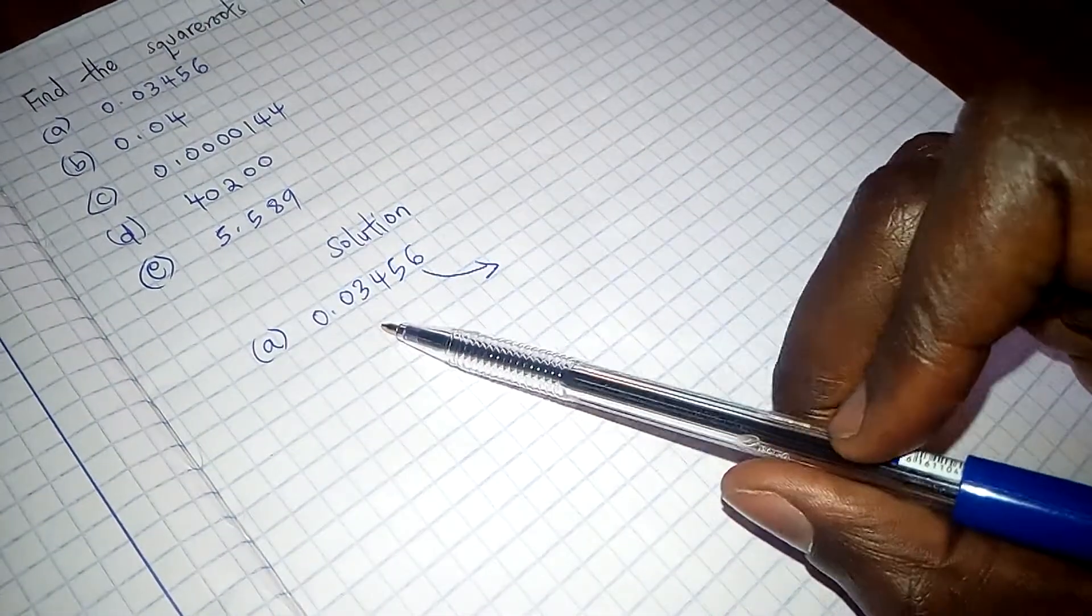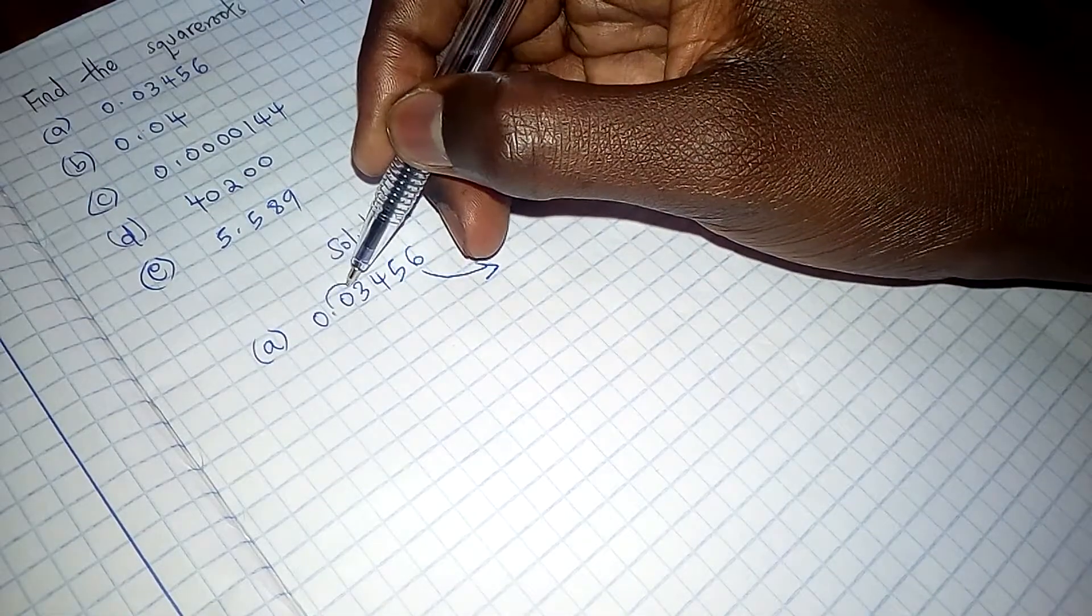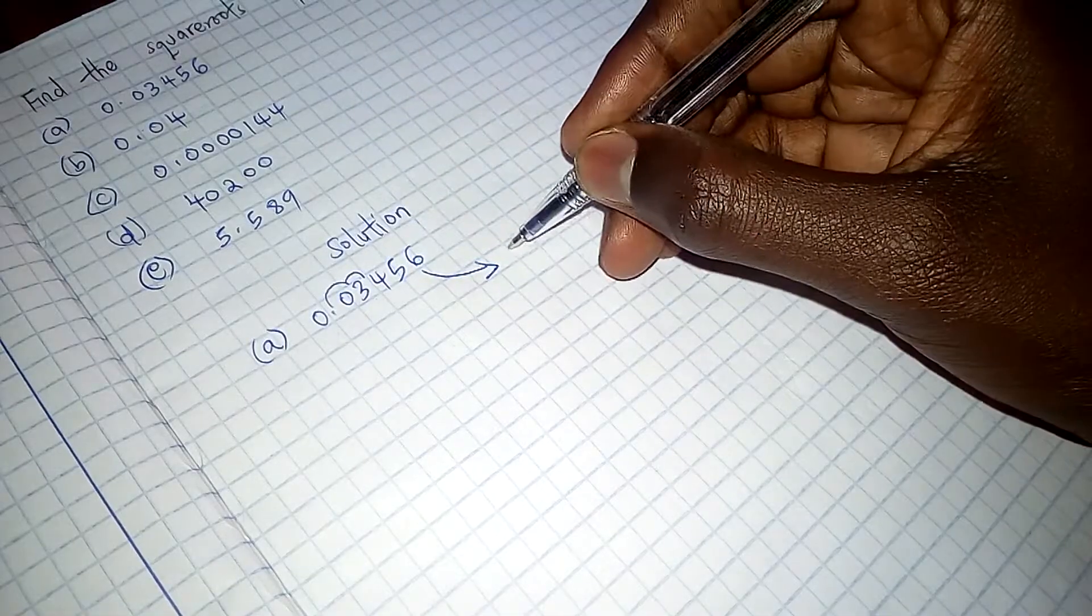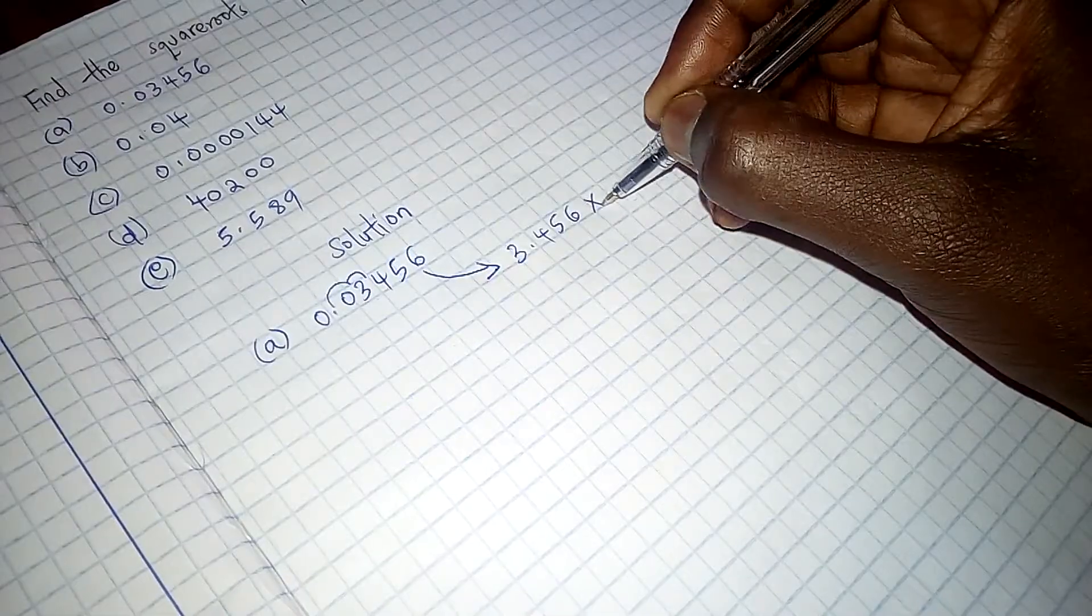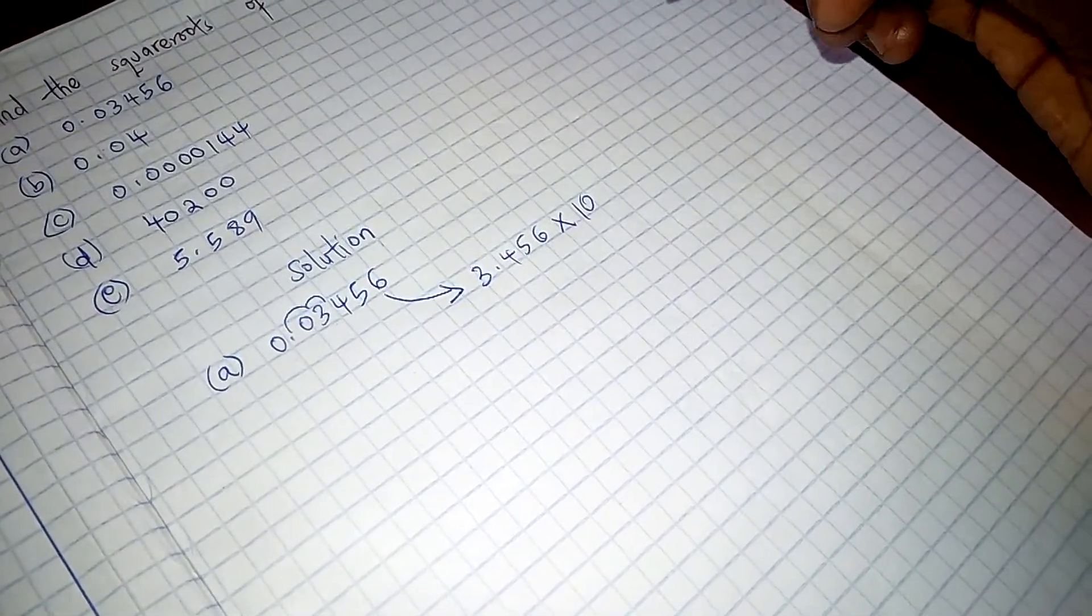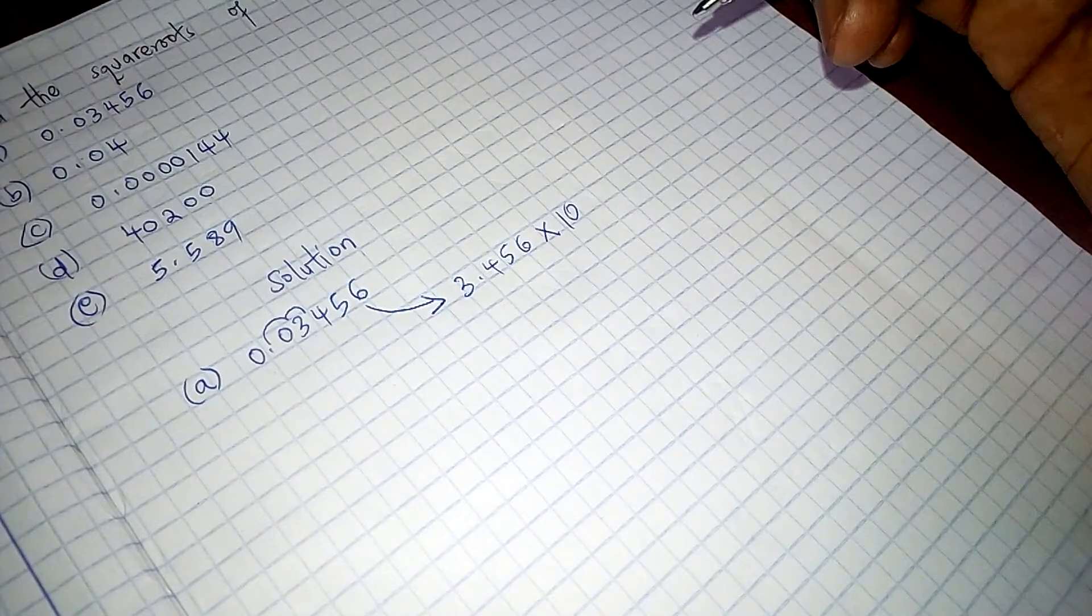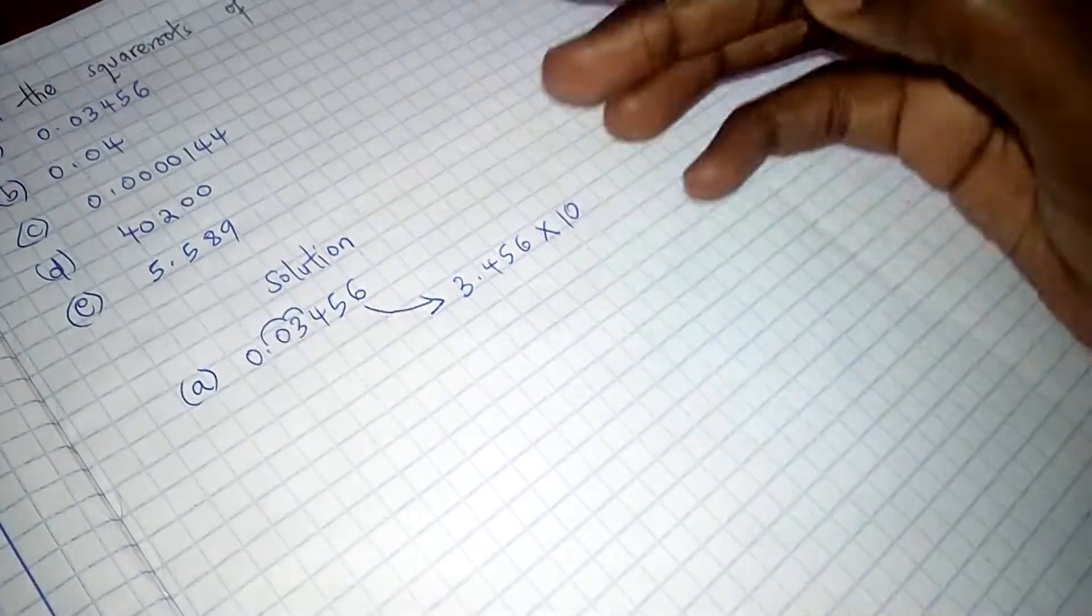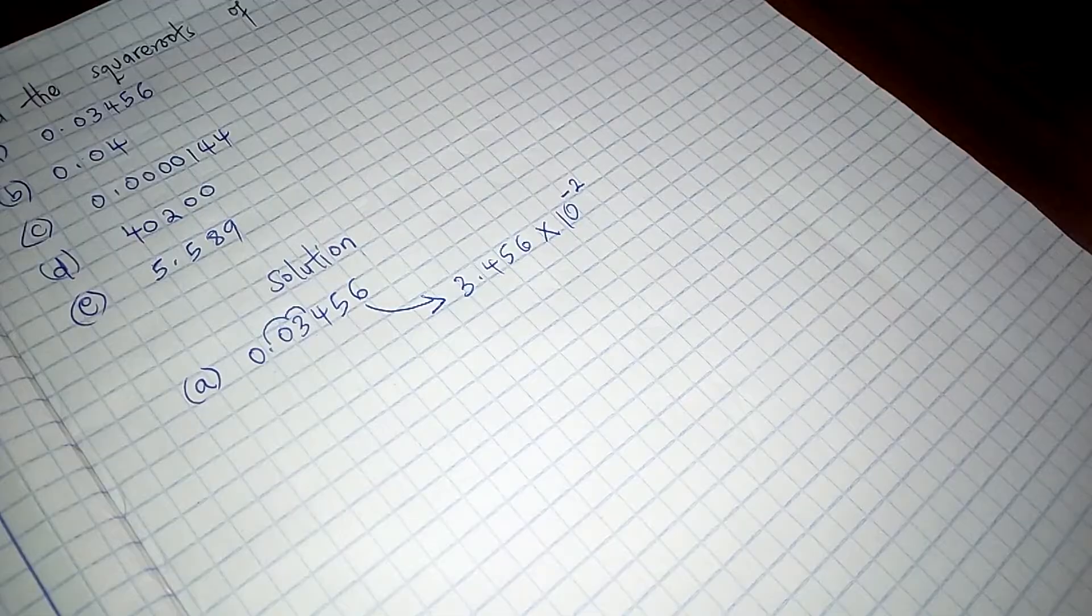So when we put it in the first range, the range between 1 to 10, we are going to have the decimal move here once, twice, so we have 3.456 times 10 to the power of, because it is moving from left to right, our power is going to be negative. So it has moved two steps. So we have 10 to the power of negative 2.